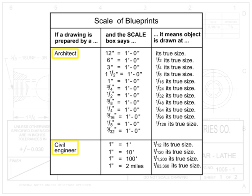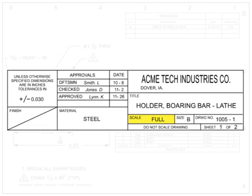Architects and civil engineers use different types of scales, as shown here. The signature block contains all signatures required for the drawing to be officially released and published by the creator. Signatures and approvals should all be signed; if they are not, the drawing may not be an official release that is ready for manufacture.